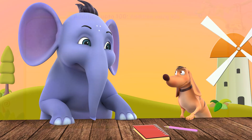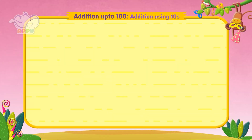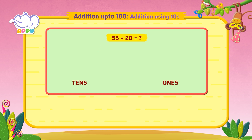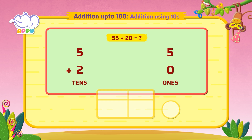Let me show you. Let's see what is 55 plus 20. We write 55 as tens and ones, which is 5 tens and 5 ones. And 20 as 2 tens and 0 ones. Now we add the tens together, so we get 7 tens.